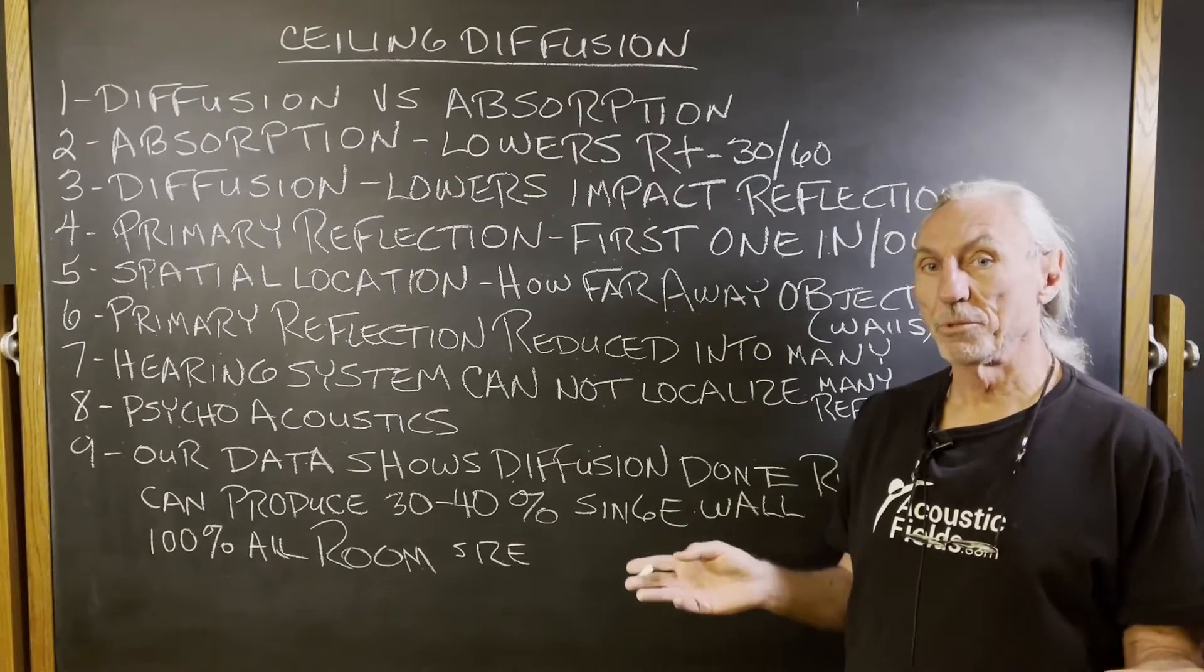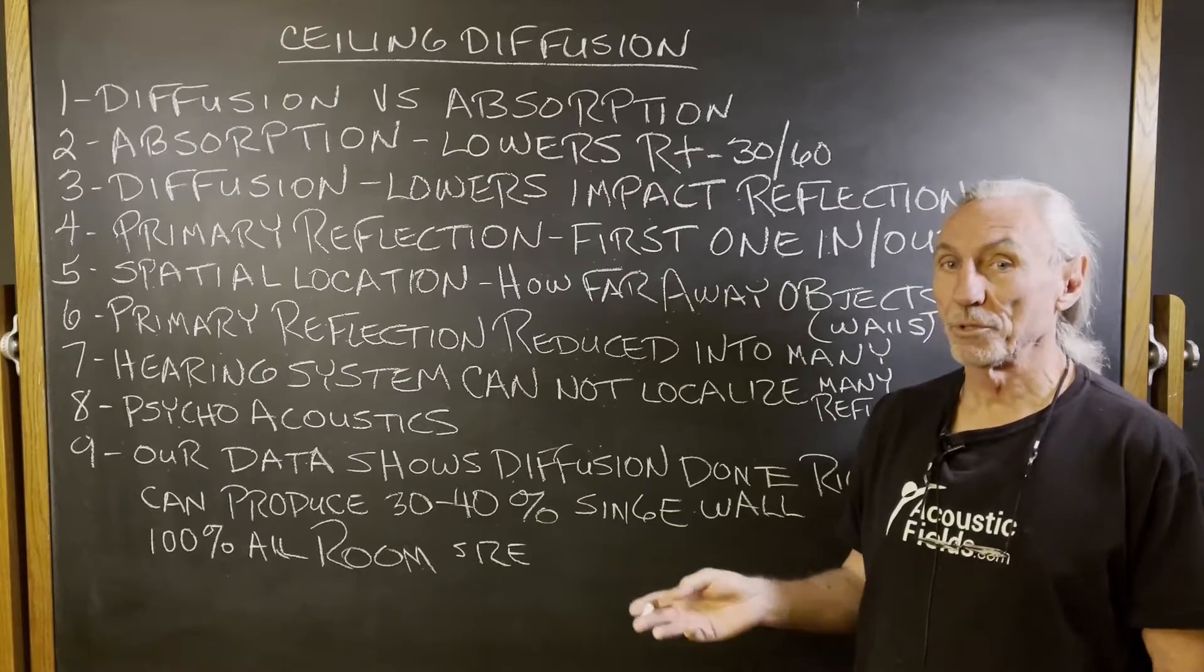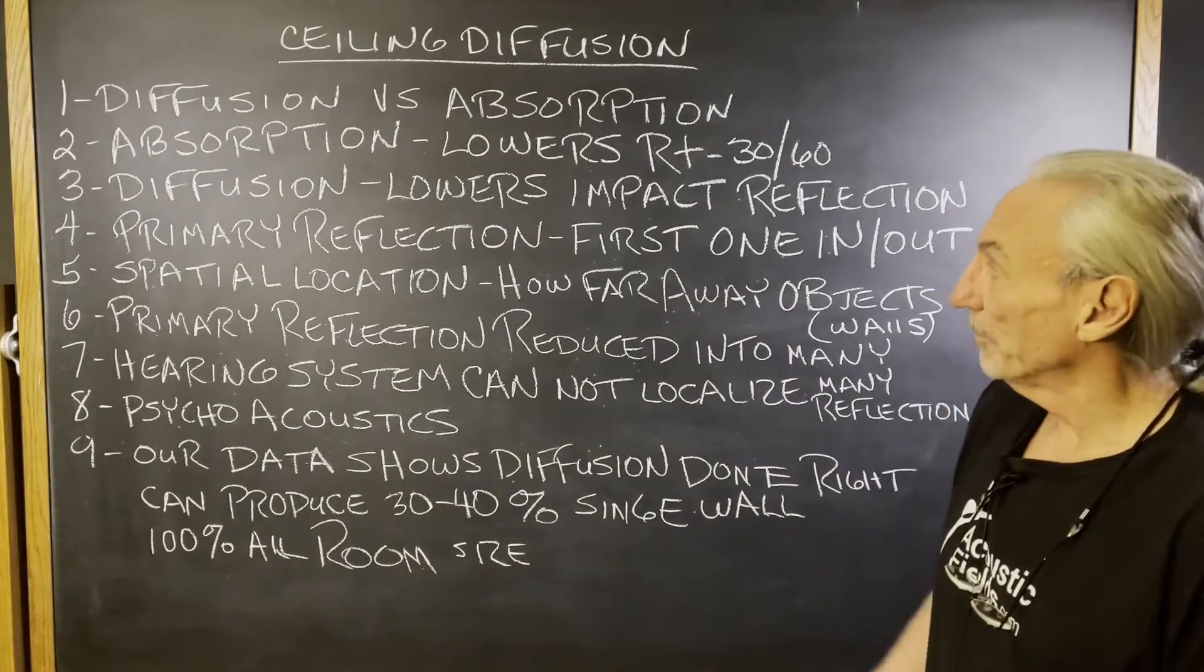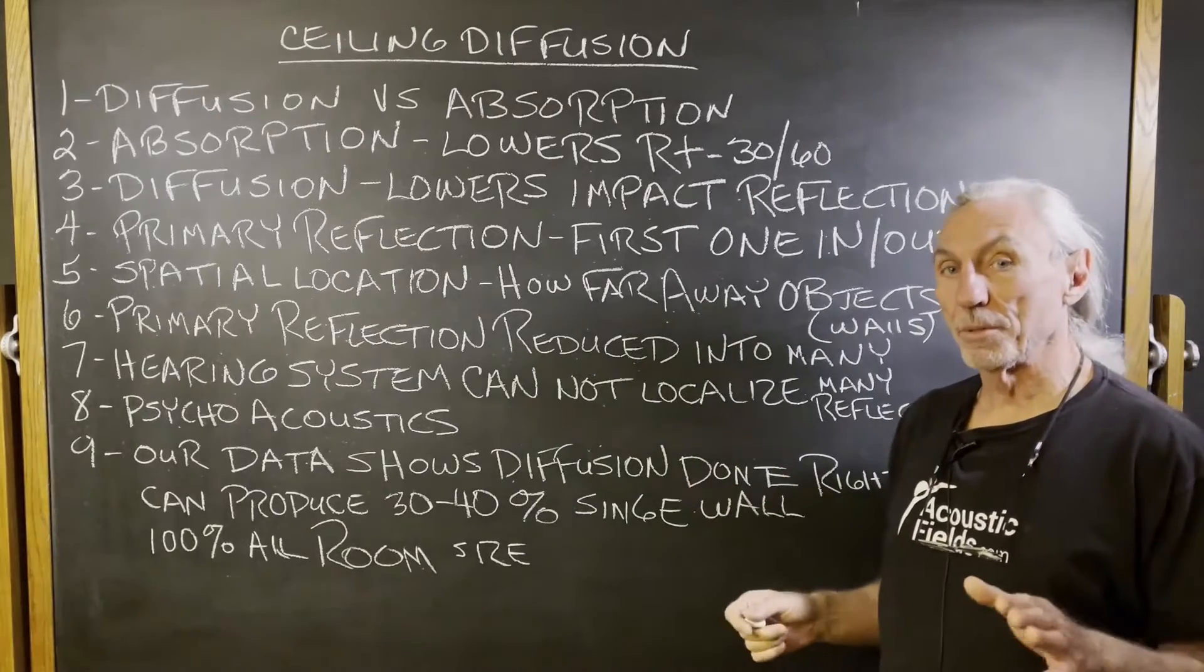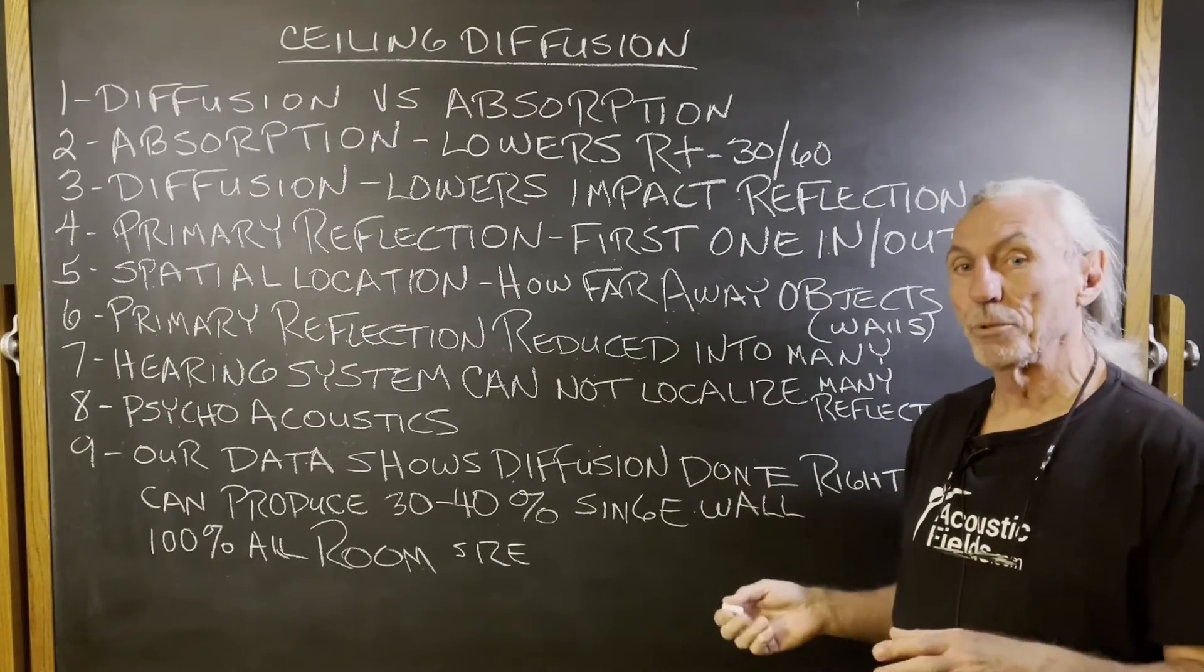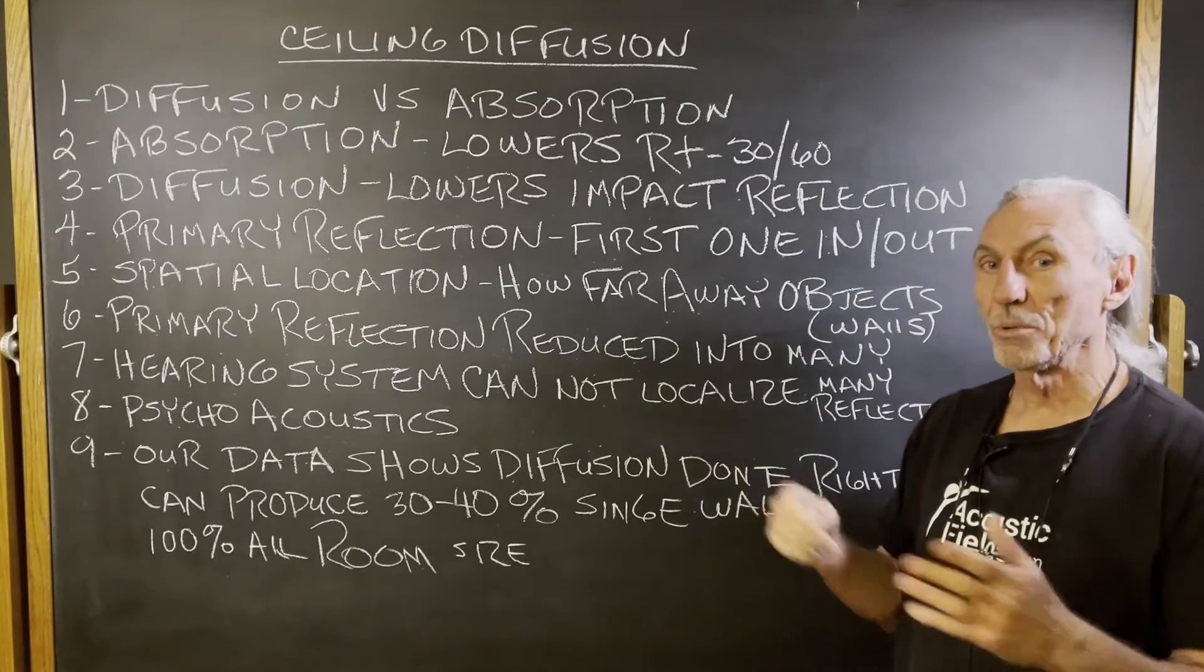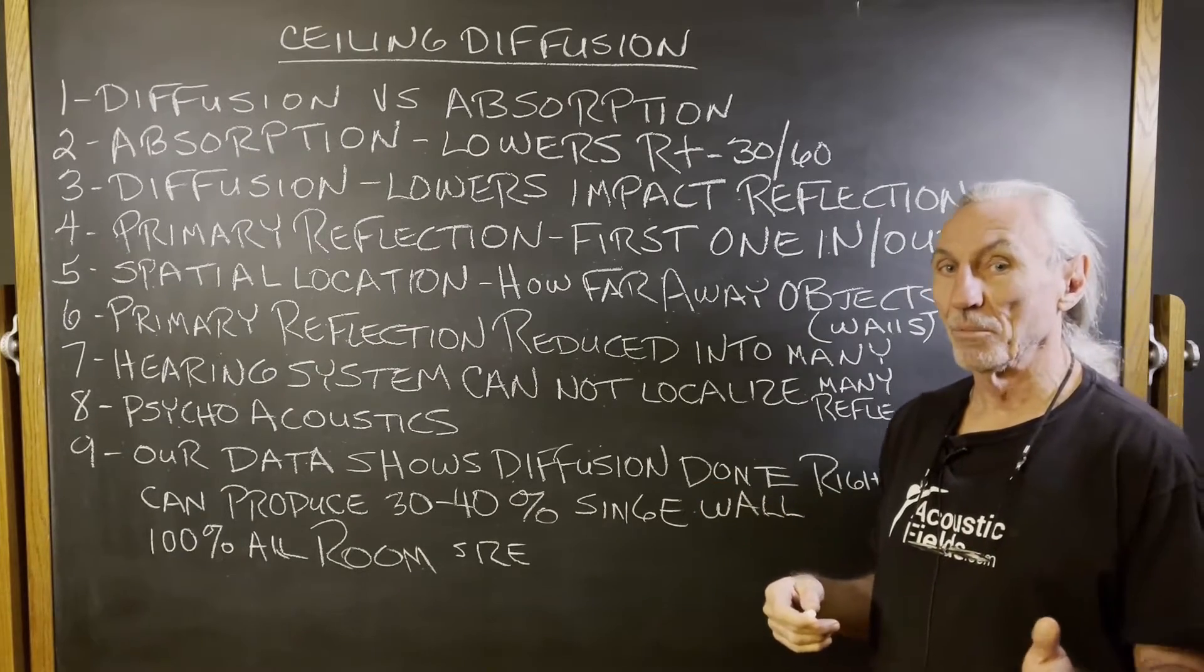Two choices for treatment: diffusion and absorption. Those are the only two options we have. Absorption lowers the reverb times in the room, which improves resolution. Doesn't do anything for distance rendering, if you will.